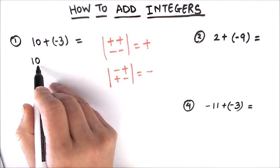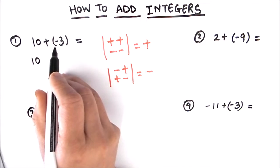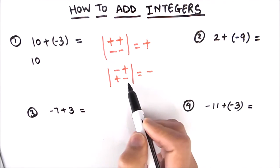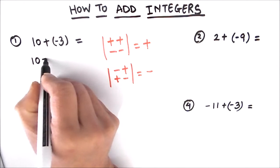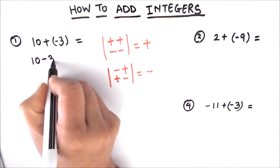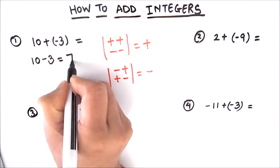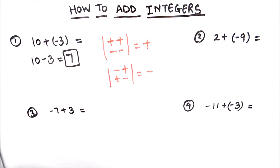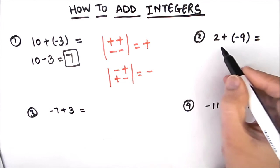We have a positive and a negative sign, so a positive and a negative will give us negative. So we'll write negative 3. Therefore, 10 minus 3 will be 7 — that's our final answer. Let's move on to the next one, which is 2 plus negative 9.